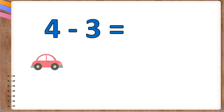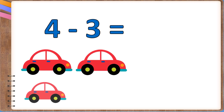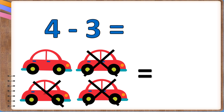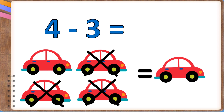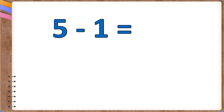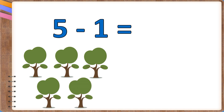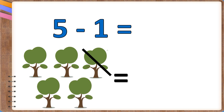5 minus 1. There were five trees in a garden. One died. Now there are four trees.